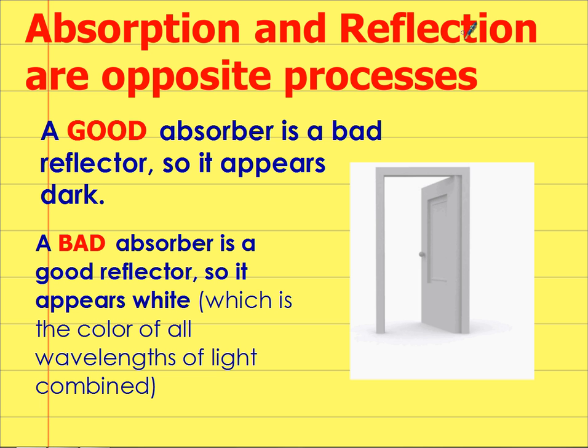Now absorption and reflection are opposite processes. So a good absorber is a bad reflector and therefore a good absorber is going to be dark. While a bad absorber is a good reflector and appears white. Remember white light's the color when you have all the wavelengths of light combined. We'll discuss this more when we do light.